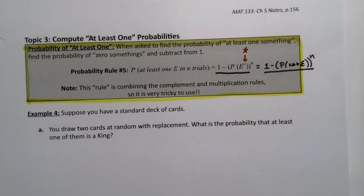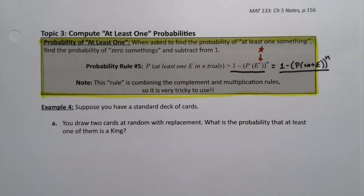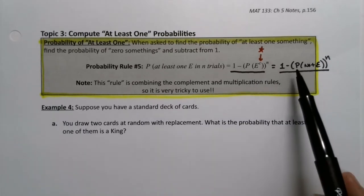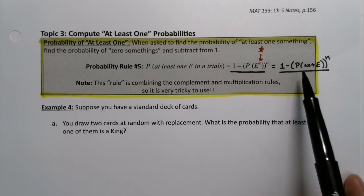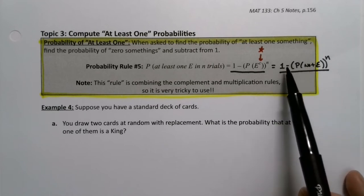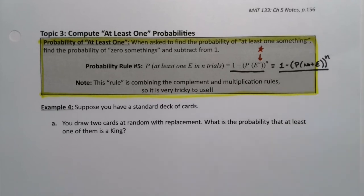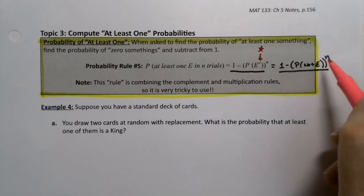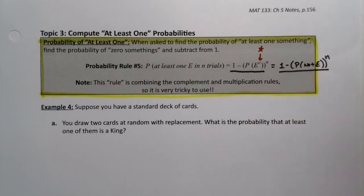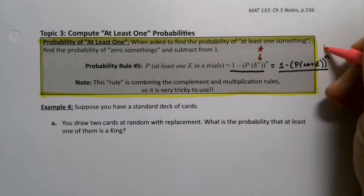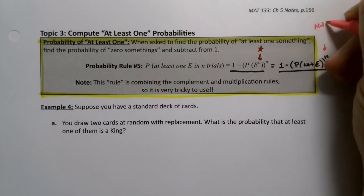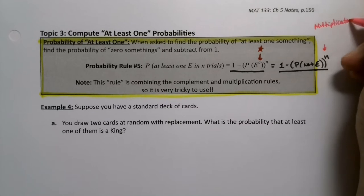These are the most difficult probabilities we'll actually do, and they're tricky because they involve two rules simultaneously. You're using the complement rule twice: the probability of not event E is a complement, and then you have one minus, which is also a complement. Plus, you're raising it to the n power, which is the multiplication rule — so we need multiplication to a power as well as subtraction from one.